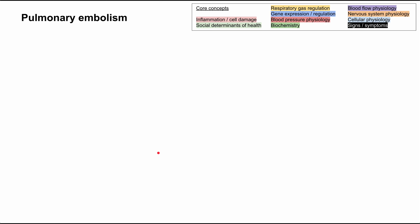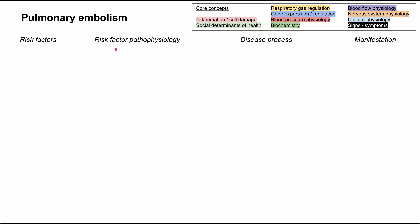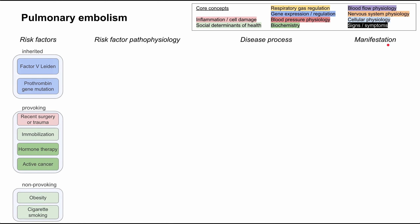This is a short video on the mechanism of disease for pulmonary embolism. We'll be talking about core concepts for the pathophysiology of pulmonary embolism, color-coded according to this key. We'll be working through the risk factors, the pathophysiology of how those risk factors contribute to the disease, the actual disease process, and the manifestations — the signs and symptoms — of pulmonary embolism. Let's get started.